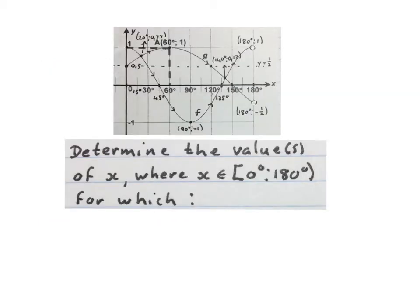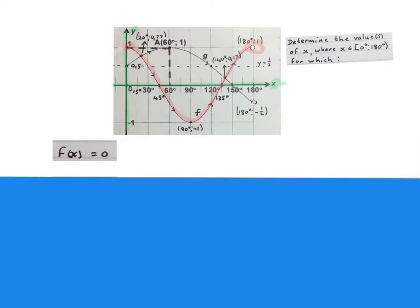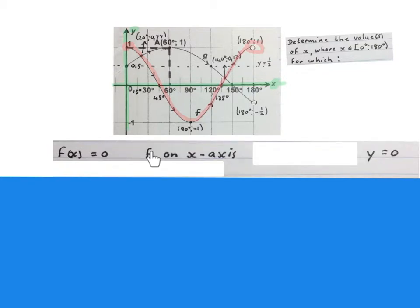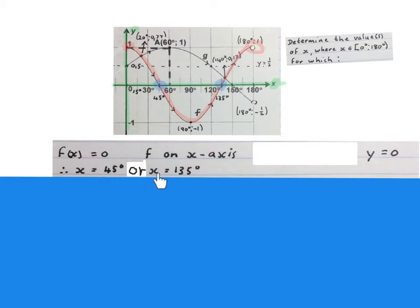All the questions in this video start with: determine the value or values of x in the given domain for which... The first question asks where is f of x equal to 0. That means where is f on the x-axis — where is y equal to 0, where the graph cuts that line. The answer is x equals 45 degrees or x equals 135 degrees.